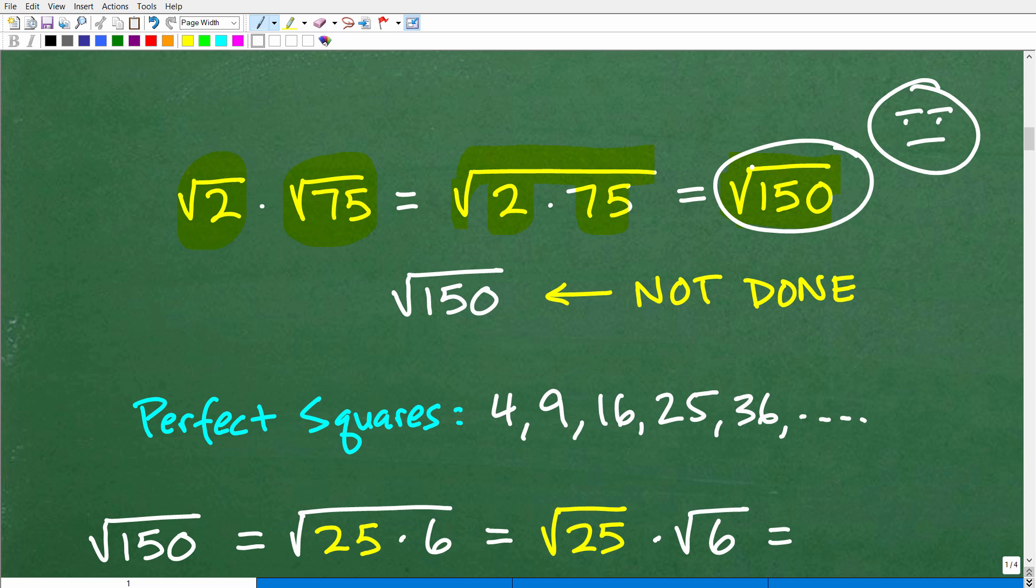So some of you may have put the answer as the square root of 150. If you put that down as your answer, I'm going to give you a straight face. That's okay—you're definitely on the right track, but you're not done. When you're dealing with square roots, it's imperative that you simplify those radicals. You simplify those values because your teacher is going to want you to understand how to do that.